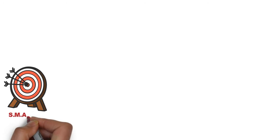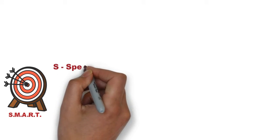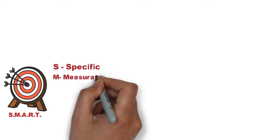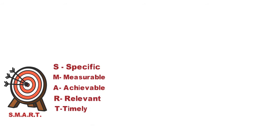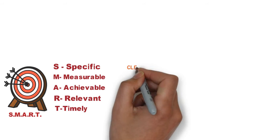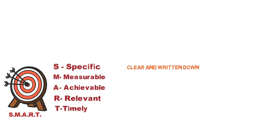Now to get started in goal setting, I recommend the SMART goals, which is an acronym for Specific, Measurable, Achievable, Relevant, and Timely. The acronym Specific is just to make sure that the goal is clear and written down. For example, one could say 'I want to lose weight by 10 kg'—that's quite specific. Another acronym is Measurable.